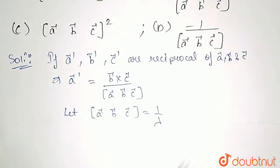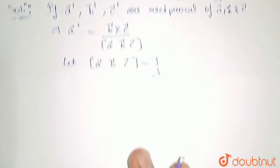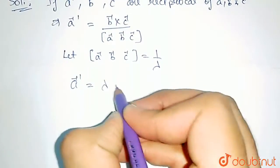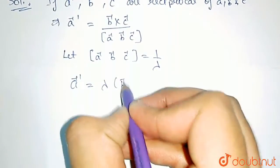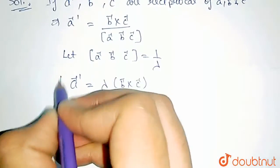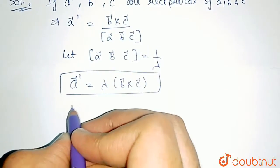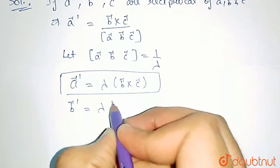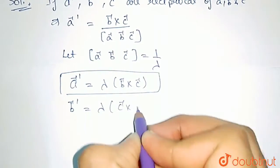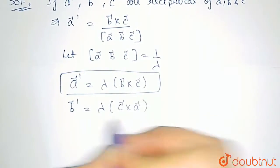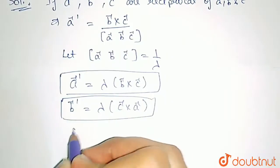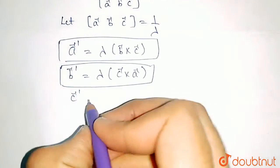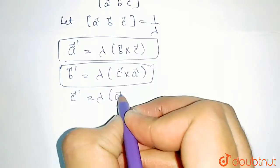So if the scalar triple product is equal to 1 by lambda, then A' vector would be equal to lambda times B cross C. Similarly, we can find B' vector, that would be equal to lambda times C cross A. And similarly, C' vector would be equal to lambda times A cross B.